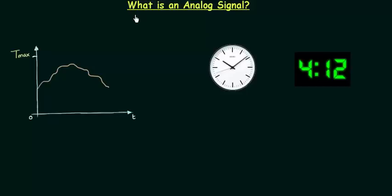In the last presentation we completed the introduction of the signals and I also gave you one example in which we were measuring the temperature from 9am in the morning to 9pm at night. I also told you that in electrical and electronics, the signal is nothing but the change in current and voltage with time. In this presentation we will move forward and see what is an analog signal.